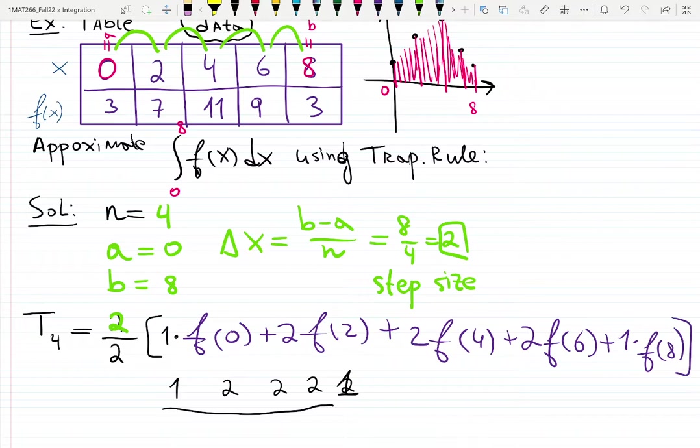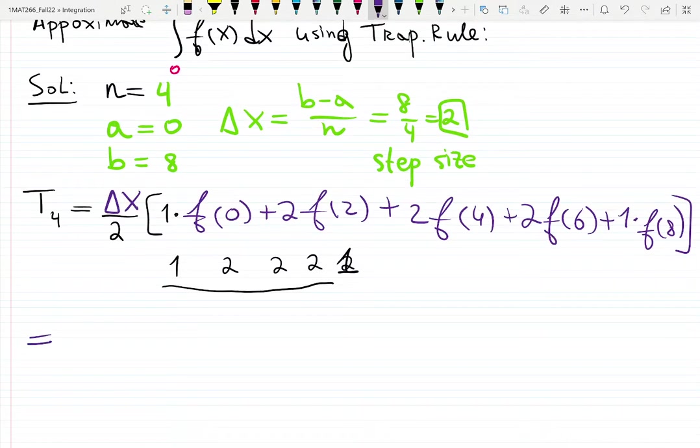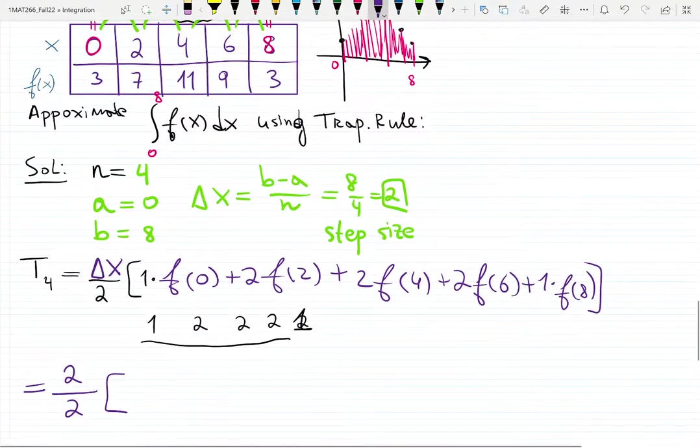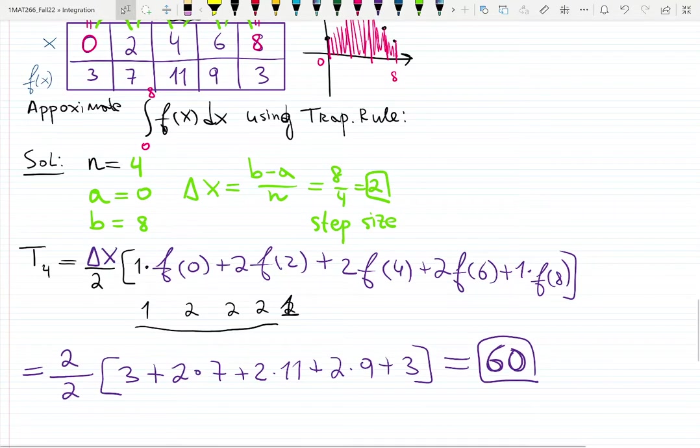This equals (2/2)[1×3 + 2×7 + 2×11 + 2×9 + 1×3]. I'm just writing the second row of the table. The answer is exactly 60. The approximation is 60.